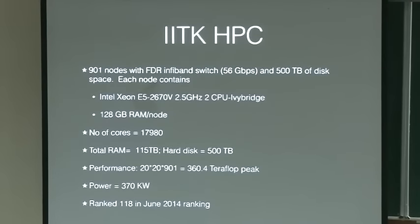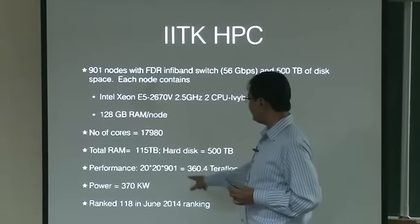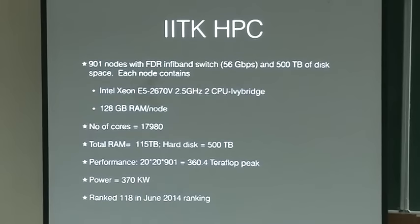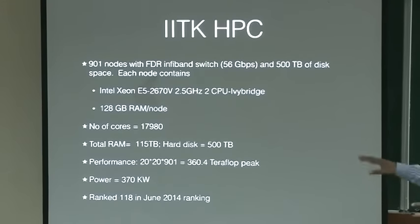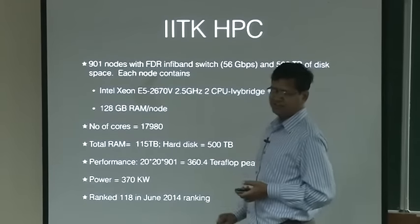Each core can do 20 giga-FLOPS. Multiply 20 GFLOPS by 20 cores per node by 901 nodes — it comes out to 360 tera-FLOPS, or about 0.3 peta-FLOPS (10^15 is peta). How much power does it take? It takes 370 kilowatts — about 0.3 megawatts. And how much RAM does it have? It has 115 terabytes of RAM and 500 TB of hard disk. It is a big machine.